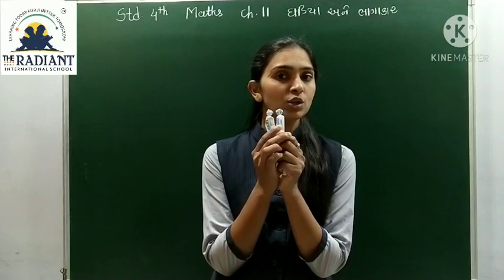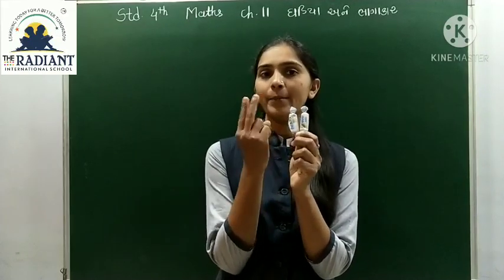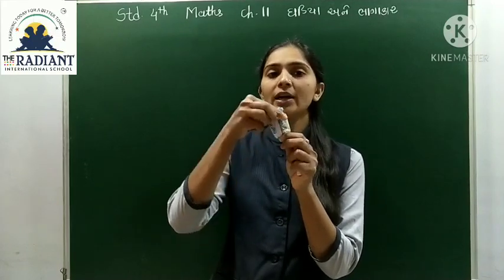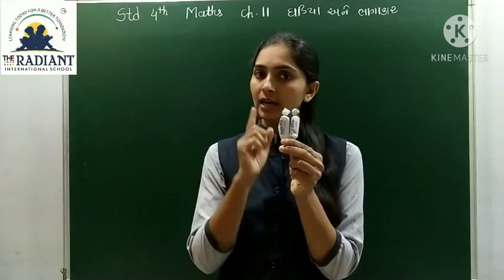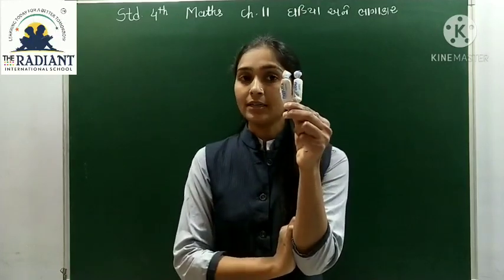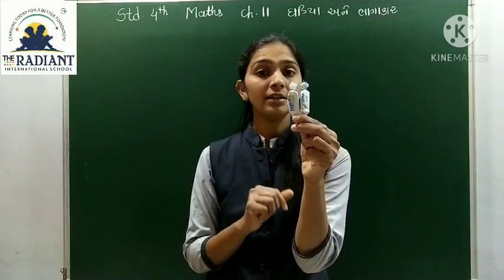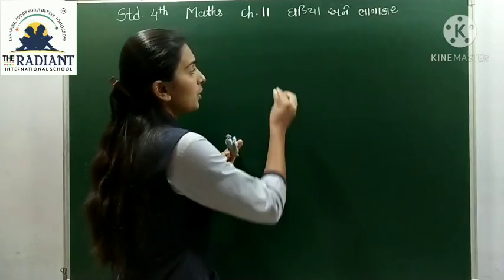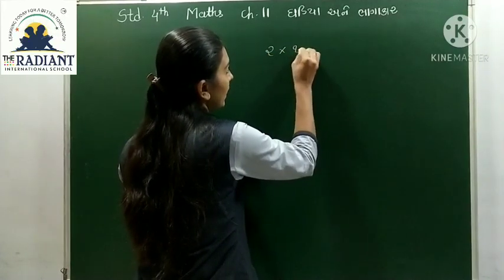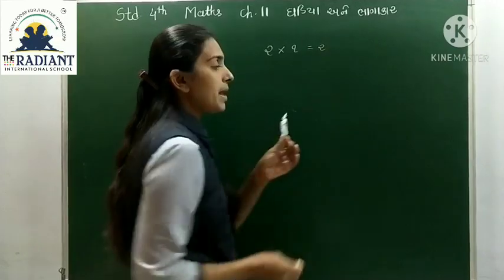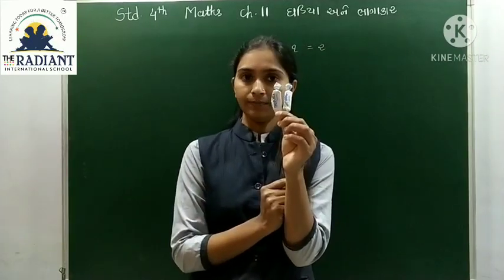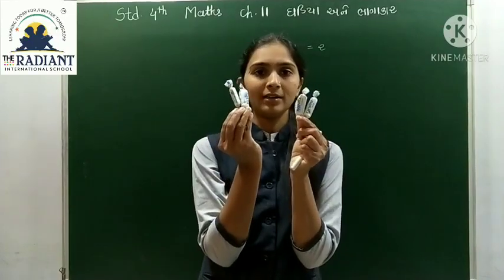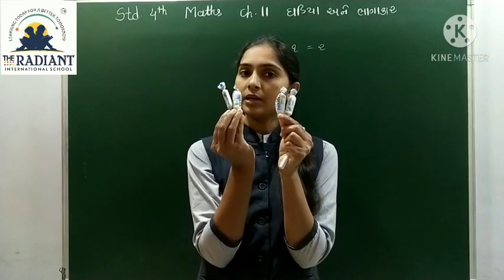મારા હાથમાં ચોક્લેટ છે - કેટલી ચોક્લેટ છે? બે ચોક્લેટ છે. મેં કઈ રીતે લીધી છે? સાથે લીધી છે. એટલે એક વખતમાં મેં બે ચોક્લેટ લીધી. એક બાર માં કેટલી ચોક્લેટ લીધી? બે ચોક્લેટ. આ આપણો 2 એકાનો ઘડિઓ: 2 ગુણ્યા 1 બરાબર 2.